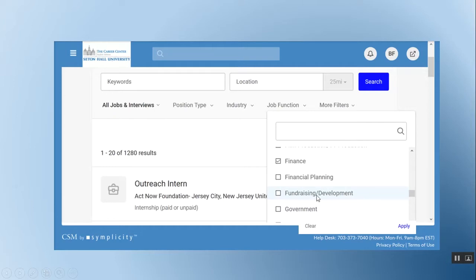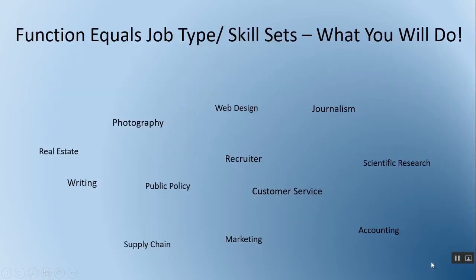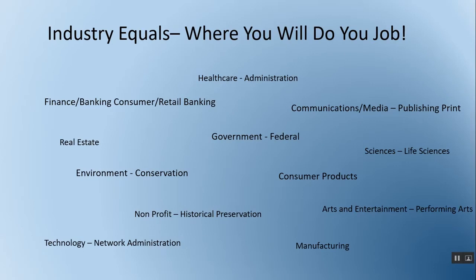Looking at job function — I'm clicking on the function of Finance as an example. A job function is basically a job type or a set of skills. From a job description perspective, it's what you will be doing: it could be photography, writing, public policy, journalism, scientific research, or supply chain — categories and collections of skills that you've acquired up to this point in your career and can actually demonstrate in a job.